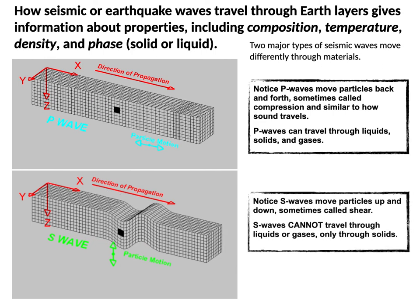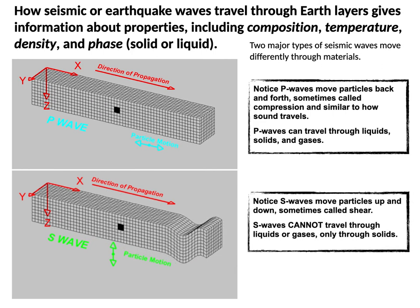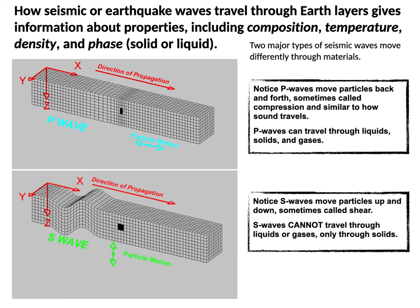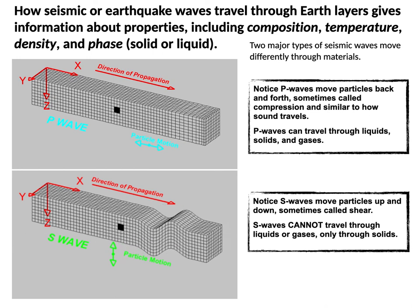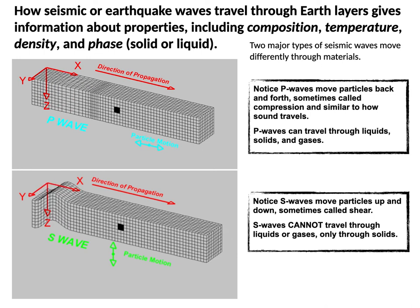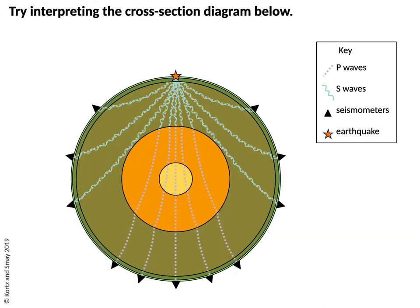Unlike P waves, S waves move particles up and down in a motion called shear. Because of that motion, S waves can't travel through liquids or gases — only through solids. People figured out that if we could monitor seismic waves — both S waves and P waves moving through the Earth generated from natural earthquakes — we might be able to figure out what is going on inside the Earth by capturing those earthquakes at all sorts of different locations.